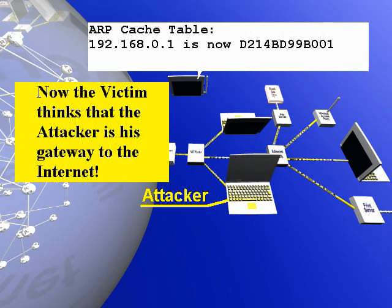Did they make the assumption that no one who has direct access to your LAN would be malicious? There was no assumption — they didn't even think about it. It wasn't even on the radar. We see that a lot with security issues, where nobody even thought about it because nobody had done it, or there were no exploits to that point.